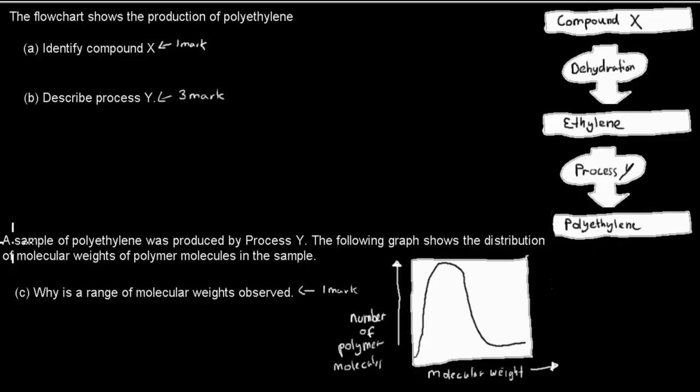And then the next part is, a sample of polyethylene was produced by process Y. The following graph shows the distribution of molecular weights of polymer molecules in the sample. C, why is the range of molecular weights observed? That's with one mark. So here's your number of polymer molecules and molecular weight. When you're ready, press pause and attempt the question. And when you're ready, press play and I'll cover the actual answer.